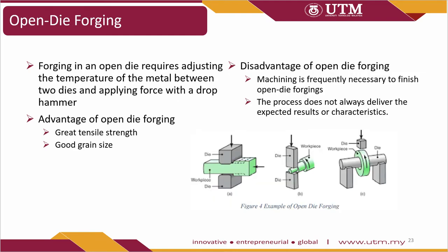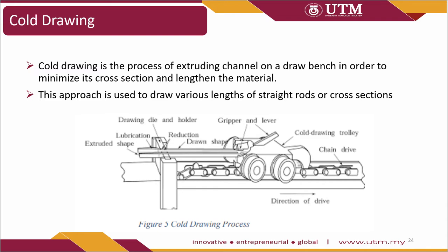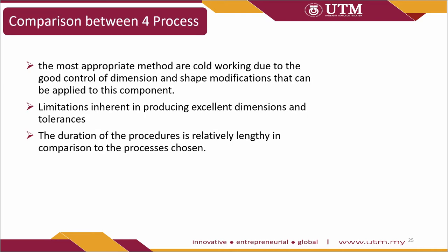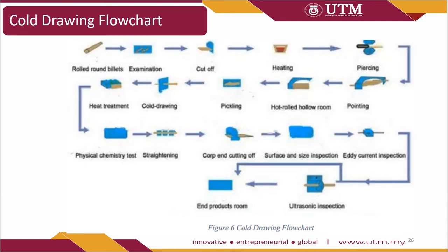Open die forging requires adjusting the temperature of the metal between two dies and applying force with a drop hammer. Its advantages include great toughness and strength and good grain size. Its disadvantage is that machining is frequently necessary to finish open die forgings, and the process does not always deliver expected results. Cold drawing is the process of pulling a channel on a draw bench to minimize its cross section and lengthen the material, used to draw various lengths of rods or cross sections. The most appropriate method is cold working due to good control of dimensions. This is the cold drawing flow chart.